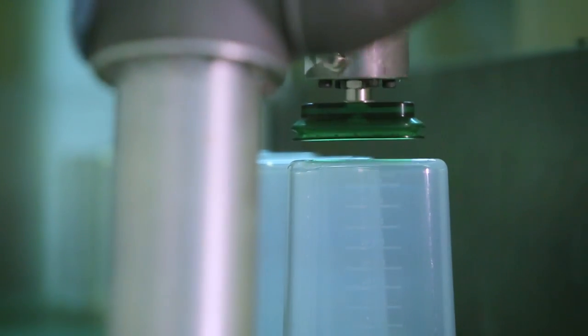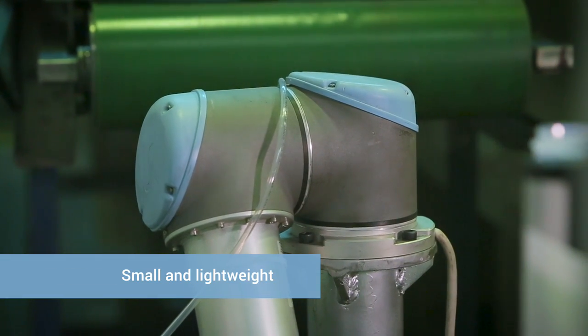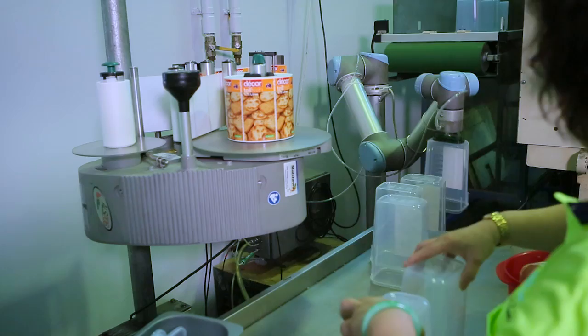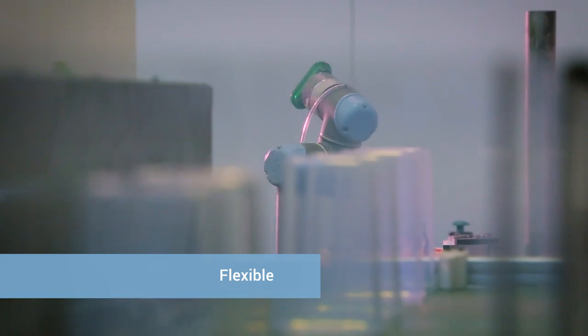In contrast to traditional industrial robots which tip the scales at 50 to 100 kilograms, the UR5 is extremely compact and lightweight. Weighing a little over 18 kilos and with a small footprint of only one square meter, the UR5 can easily be moved around the production floor, mounted and set up without requiring changes to the existing layout.